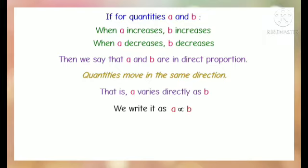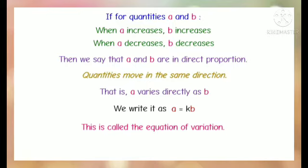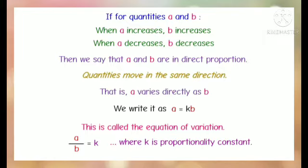We write it as A is directly proportional to B. They are not equal, but proportional. The equality can be brought as A = KB. This is called the equation of variation. A/B = K, where K is the proportionality constant.